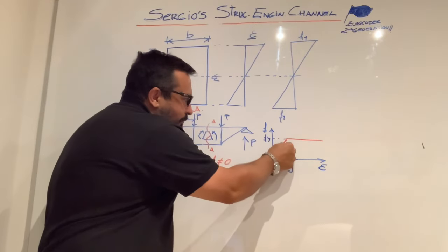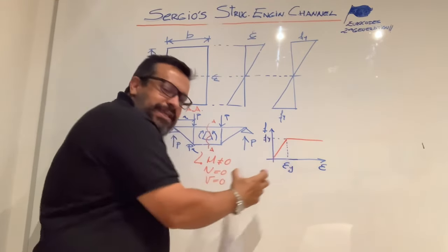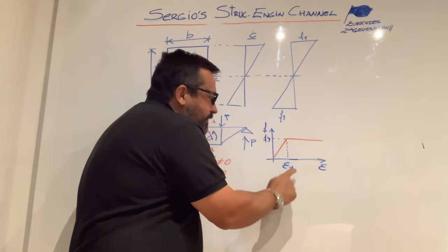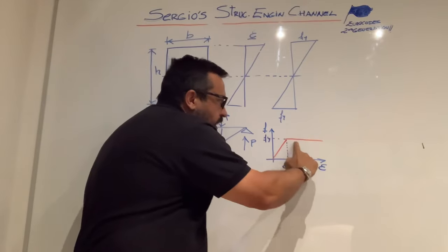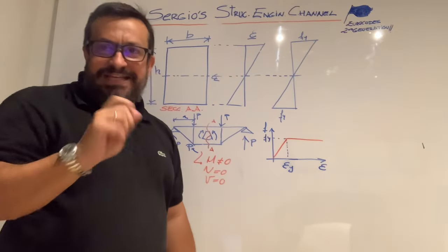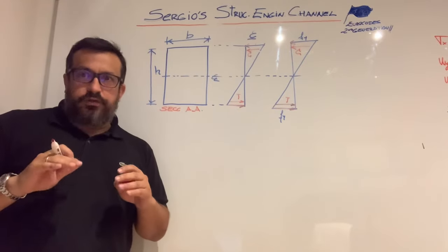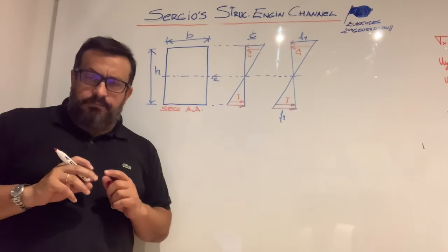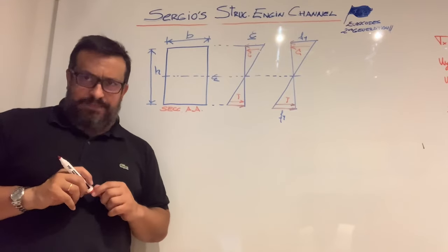The inclined branch represents the elastic behavior of the material, and from the yield point — that is the deformation yield point — we have a horizontal branch that represents the plastic behavior of the material. The first thing we have to do in order to create the bending moment-curvature diagram is to get the value for the yield bending moment.